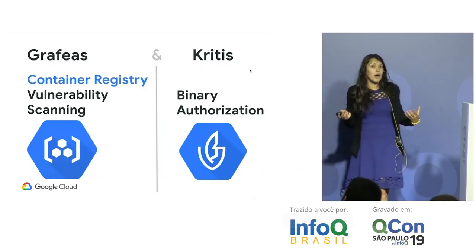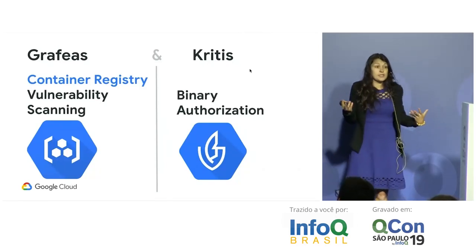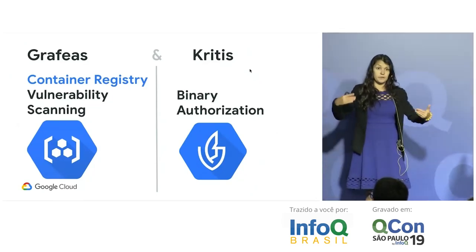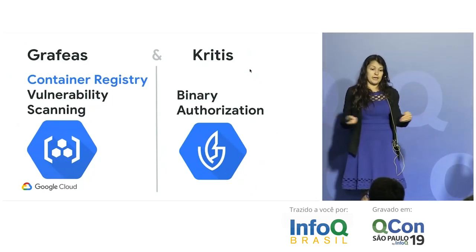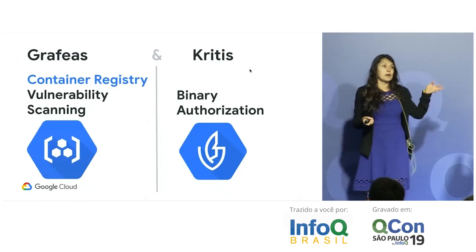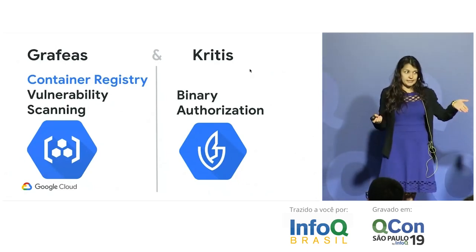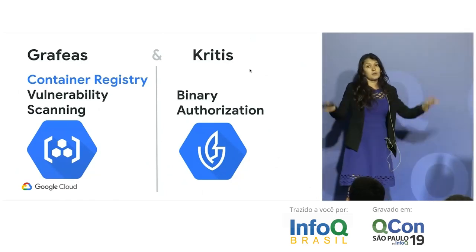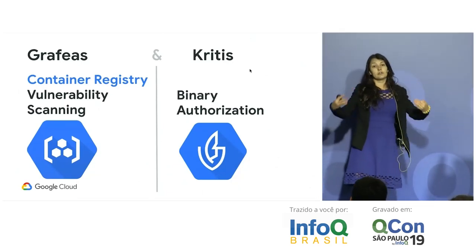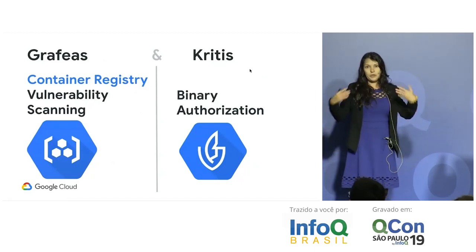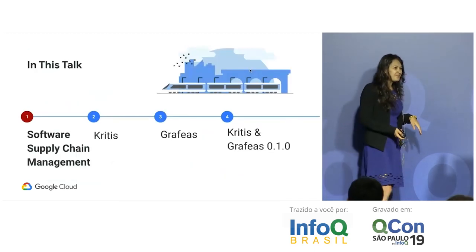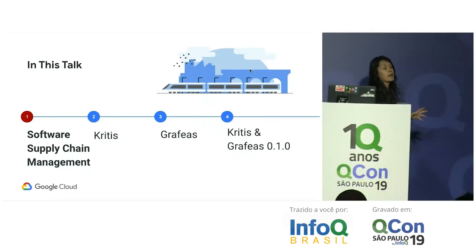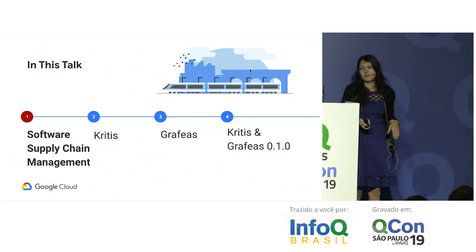These projects have existed for a while and are not just toy projects — they're used in production. Google has internal implementations available on Google Cloud Platform: Grafeas is available as Container Registry Vulnerability Scanning, and Kritis is available as Binary Authorization. So we know it works in production.